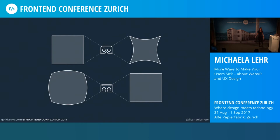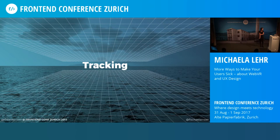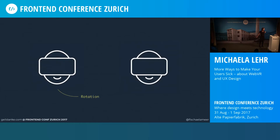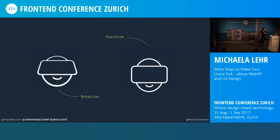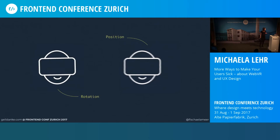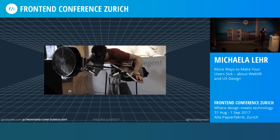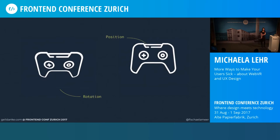By showing two slightly different images to each eye, we are already creating an effect of depth. To make our brain believe that we are actually in a virtual space, we also have to include tracking. Most VR devices include three-degrees-of-freedom tracking sensors for rotation around the three axes. More advanced devices like the HTC Vive or the Oculus Rift also track the position of the user in a room, which is often called room-scale VR. More tracking sensors will intensify the feeling of actually being present in a virtual space, which is why we also want to include input controllers with rotation and position tracking sensors.